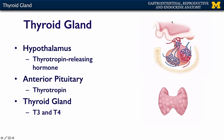Our hypothalamus is up here. It's going to secrete thyrotropin-releasing hormone into the anterior pituitary. The anterior pituitary secretes thyrotropin, and thyrotropin comes down and activates the thyroid gland to produce thyroid hormone, also known as T3 and T4. The three and four have something to do with the number of iodines involved.